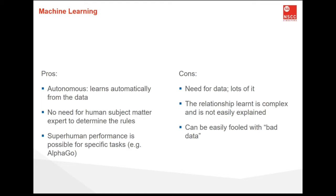With machine learning, you don't need to babysit your project every step of the way. Since it gives machines the ability to learn, it lets them make predictions and also improve the algorithm on their own. A common example of this is antivirus software — they learn to filter new threats as they are recognized. Machine learning is also good at recognizing spam. Lastly, as machine learning algorithms gain experience, they keep improving in accuracy and efficiency. For example, as data for a weather forecast model keeps growing, the algorithm learns to make more accurate predictions faster.